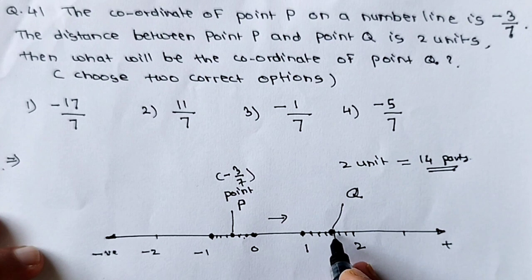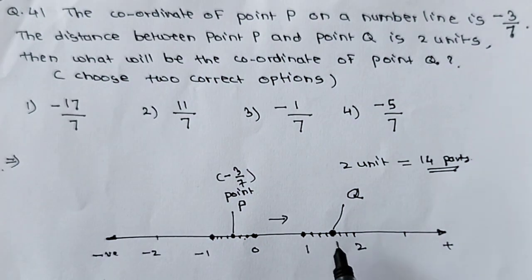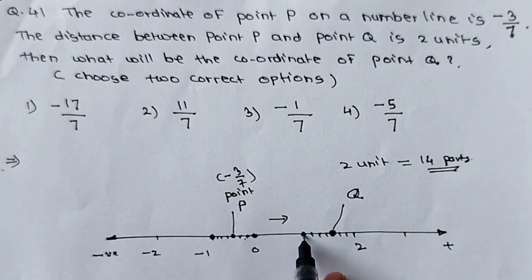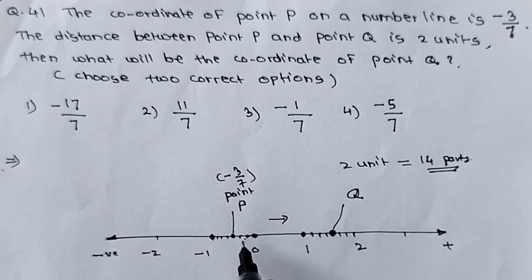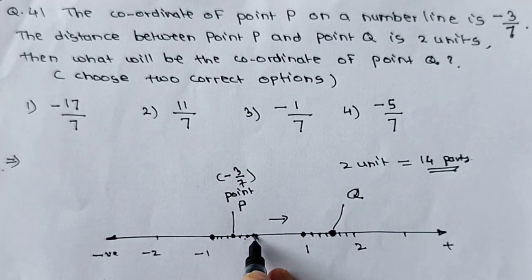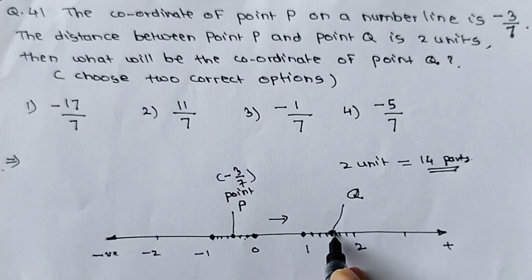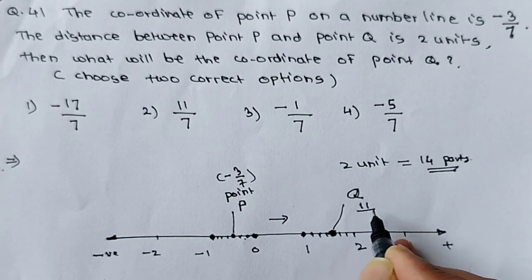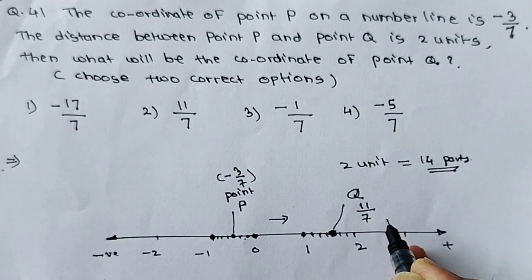Now, what are the coordinates of this point? These are in the positive direction. From 0 to 1 there are 7 parts, then 8, 9, 10, 11 — so here will be 11 upon 7. That is one method. The other point lies on the left side, 2 units away. Similarly, calculate these 2 units from point P: 1, 2, 3, 4, then plus 7 is 11, then 12, 13, 14. We require 14 parts total.